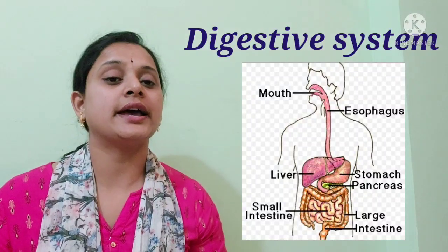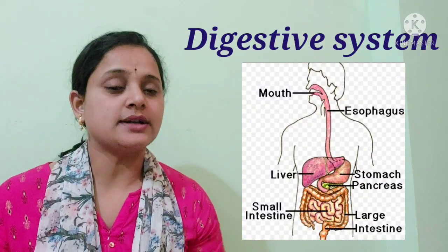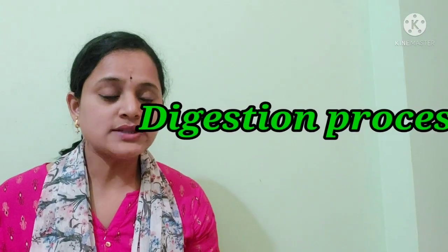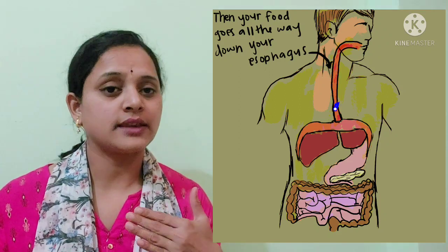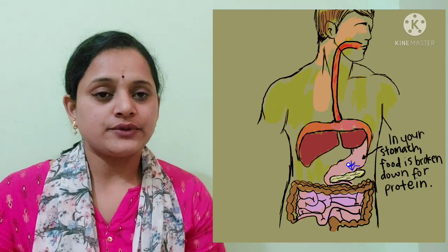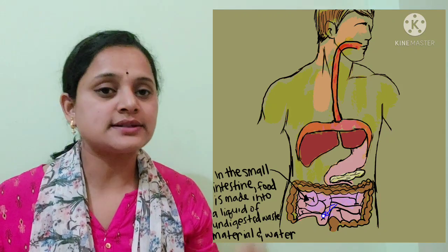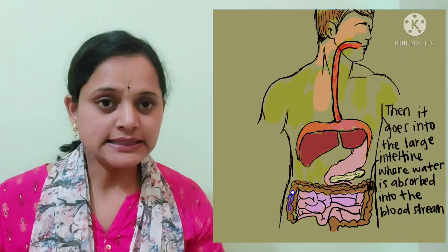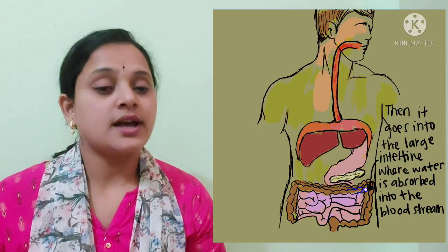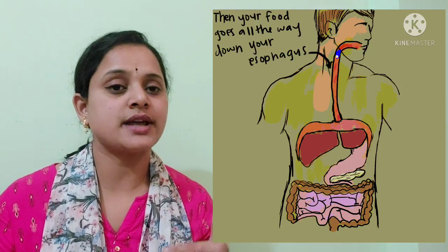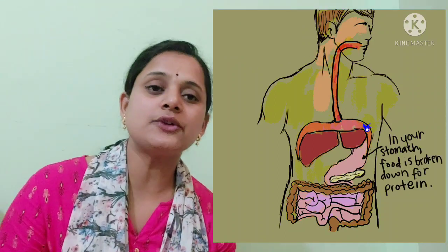The alimentary canal starts from the mouth and goes to the food pipe, stomach, small intestine, and large intestine. Once food is placed in the mouth, teeth bite and break it into small pieces. These small pieces mix with saliva and become soft, then travel to the stomach through the food pipe. In the stomach, digestive enzymes and acids act on the food, turning solid food into liquid form.